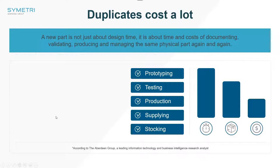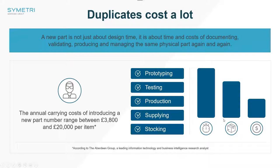Duplicates do cost a lot. The things to think about are prototyping, testing, production, supply, and stock. If we've got a duplicate of something that already exists, we're re-prototyping, re-testing, re-setting up production, dealing with new suppliers potentially, and having stock of these strange duplicates.